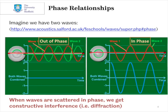On the left-hand side, we have two waves which are out-of-phase. You can see that wave 1 has peaks at positions where wave 2 has troughs. And when we combine the two, we get complete destructive interference.